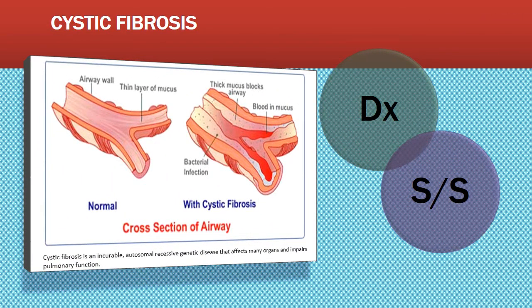Cystic fibrosis is an incurable autosomal recessive genetic disease that affects many organs and impairs pulmonary function. Although it's present at birth, almost half the people with cystic fibrosis are adults, and some are not diagnosed until they have had a child. Priority nursing interventions include teaching about drug therapy, infection prevention, pulmonary hygiene, nutrition, and vitamin supplementation. We want to protect these patients from hospital-acquired illnesses. Over time, patients may also develop GERD, osteoporosis, and sensorineural hearing loss.